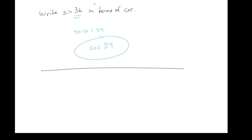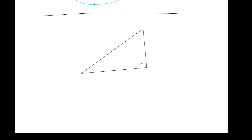For example, if you were asked what the sine of 30 is, it equals the cosine of 60. Now let's solve more triangles — a right triangle with a 35-degree angle, a hypotenuse of 53, and unknowns x and y.